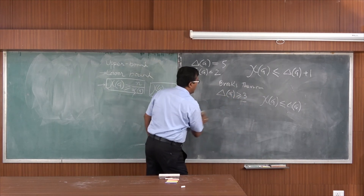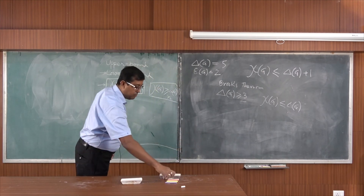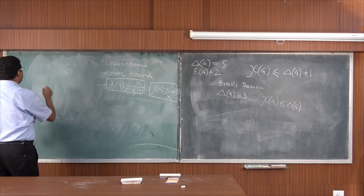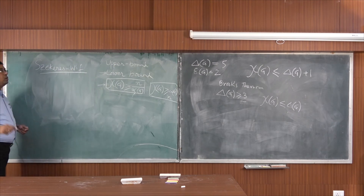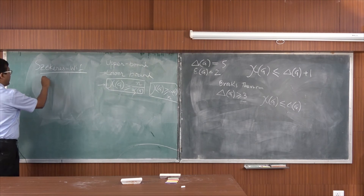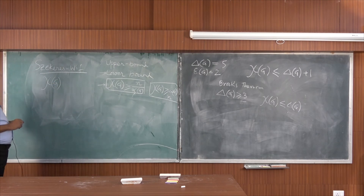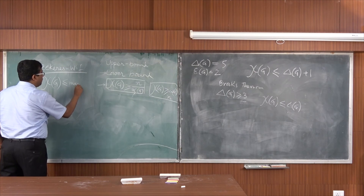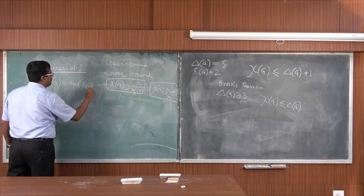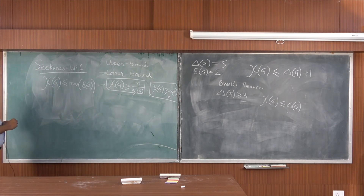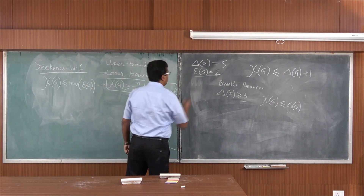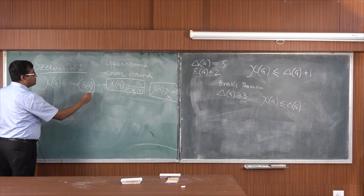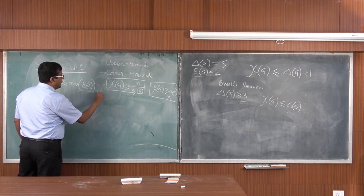Moving on from Brooks' theorem, the next theorem is called the Szekeres-Wilf theorem. It states that the chromatic number of any graph is less than or equal to max δ(G) + 1. If the graph is split into multiple smaller components or subgraphs, we calculate the minimum degree for each component, take the maximum of all those minimum degrees, and add 1.